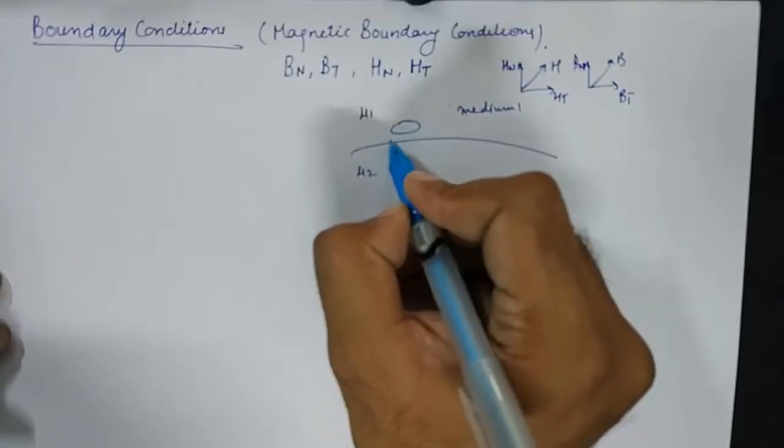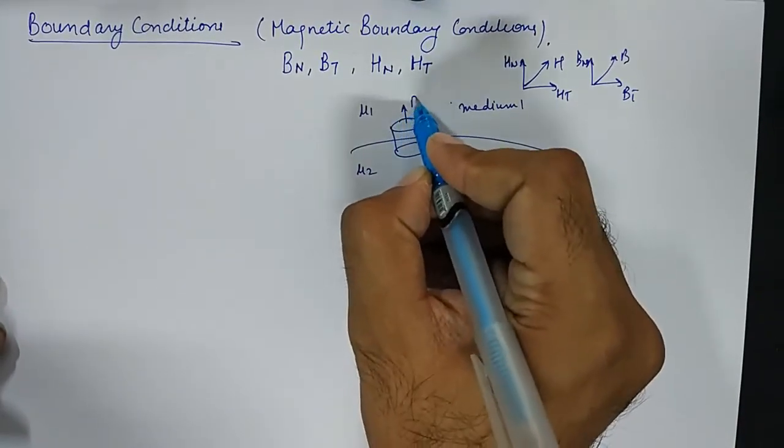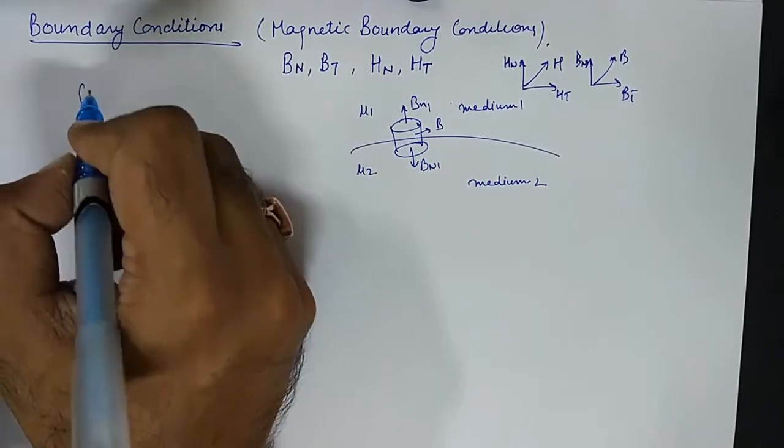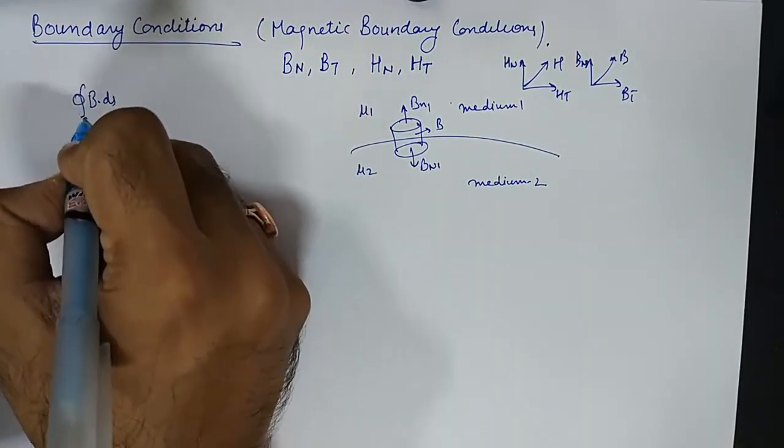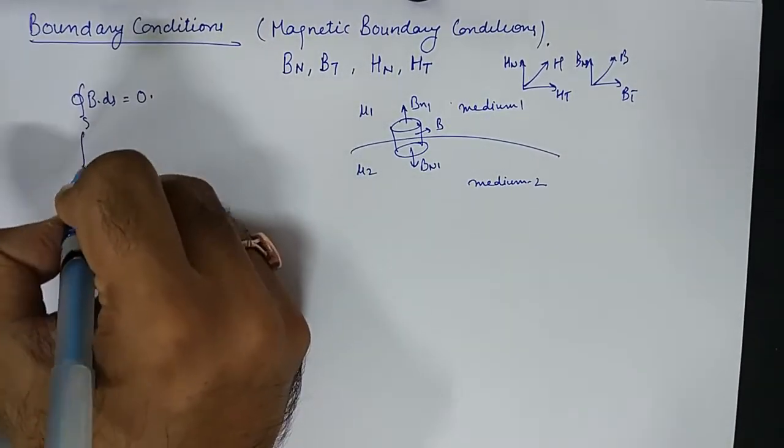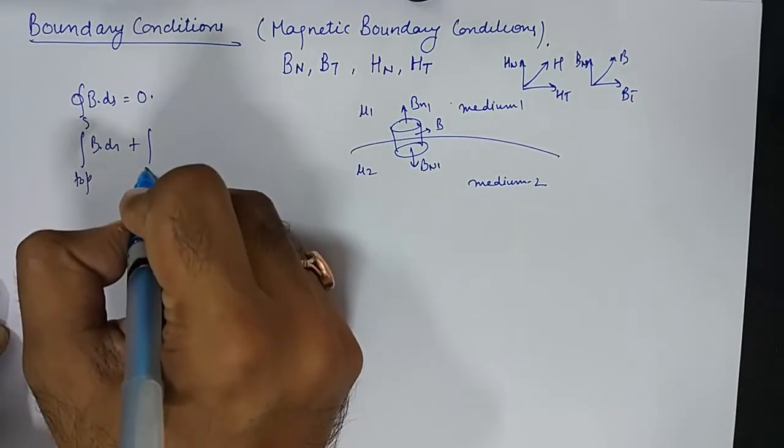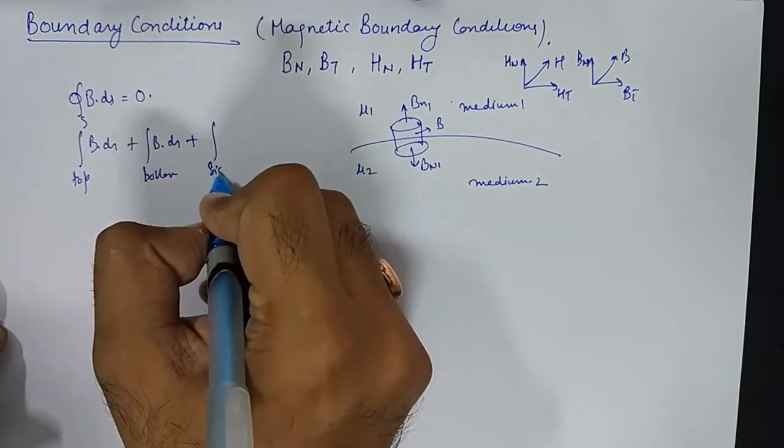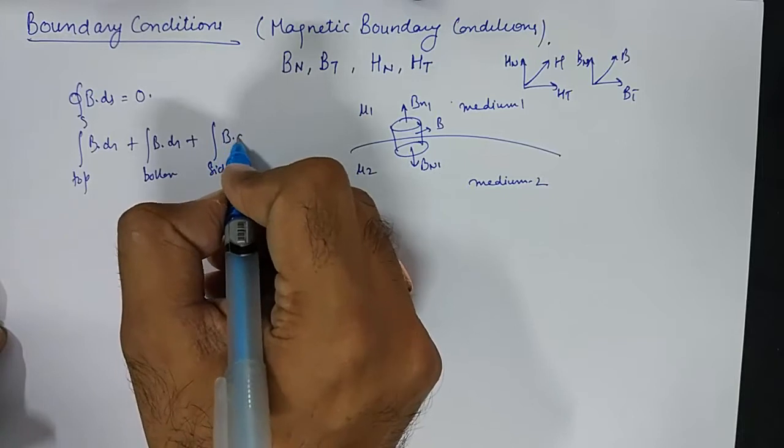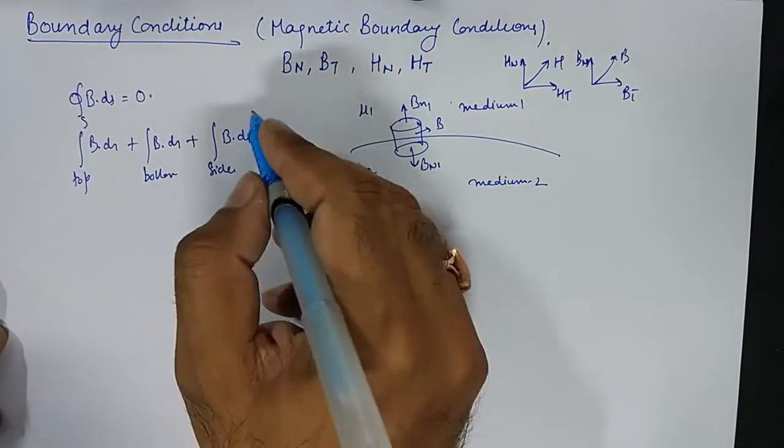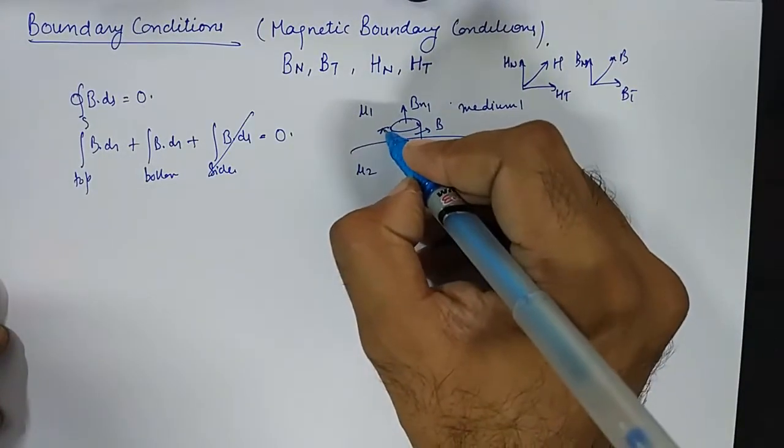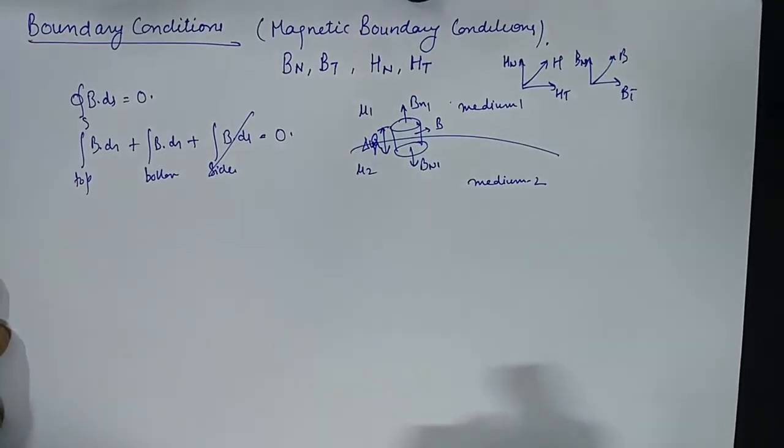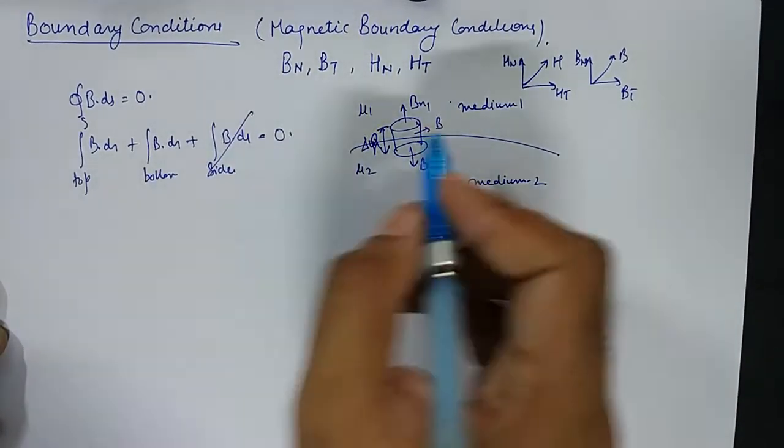To find the normal component, we take up a cylinder. We assume the flux to be coming out of every direction and we know the Maxwell's equation B dot ds is equivalent to 0. We say that from top it is coming, from bottom it is coming out and from sides also. And this one gets cancelled out because of the small length delta H. What we are left with is the top and the bottom.